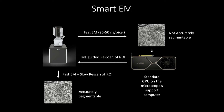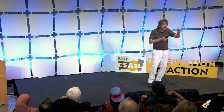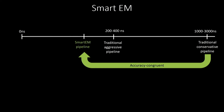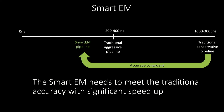A Smart EM pipeline works like this: take your microscope, use the GPU attached to it, run a fast scan through the image — say 25 or 50 nanoseconds. Even though you can't segment it accurately, you can predict where your problems are going to be. Go back and re-scan only those areas. We can actually go back and re-scan just those problematic regions, then use the combined image to get an accurate segmentation. The idea is to achieve the same accuracy as 1,000 nanoseconds but with a lot less time, while maintaining the same ballpark of accuracy.